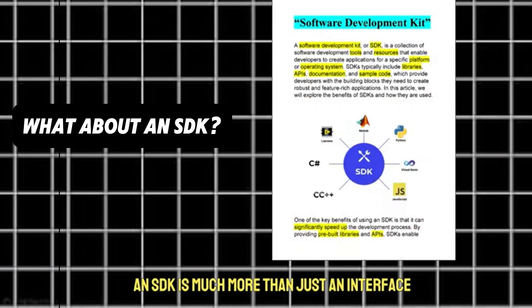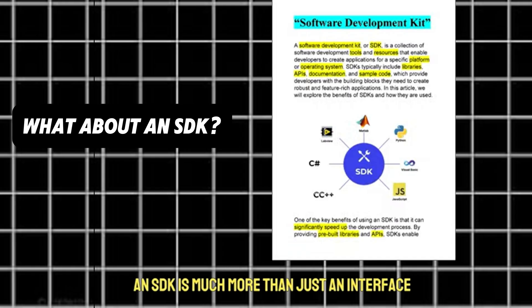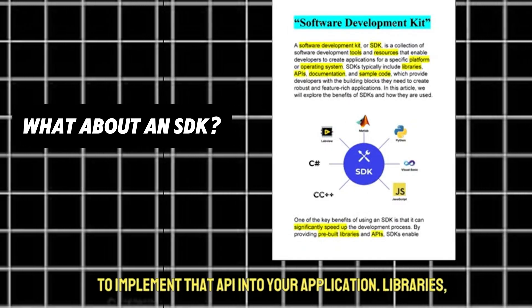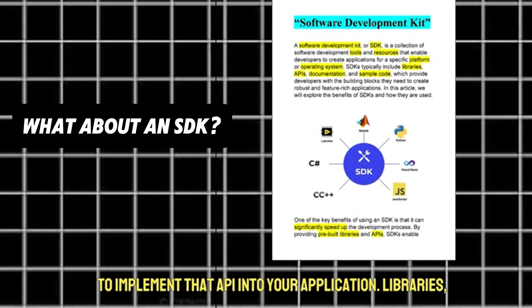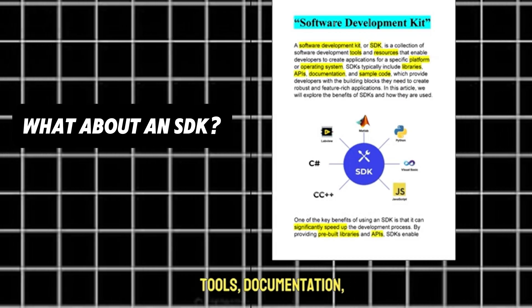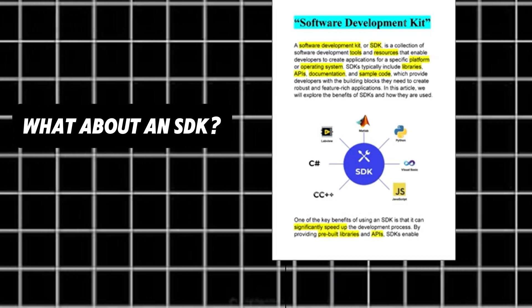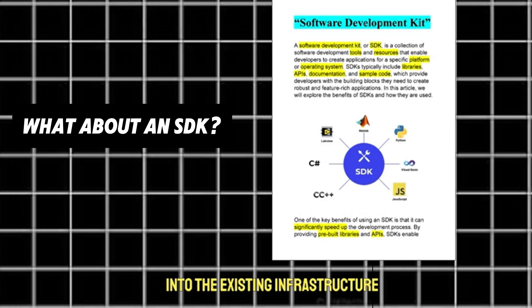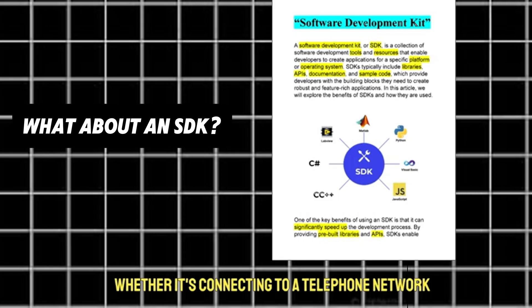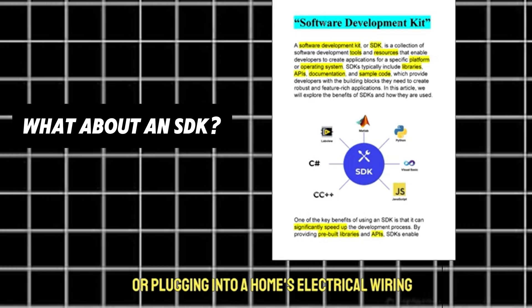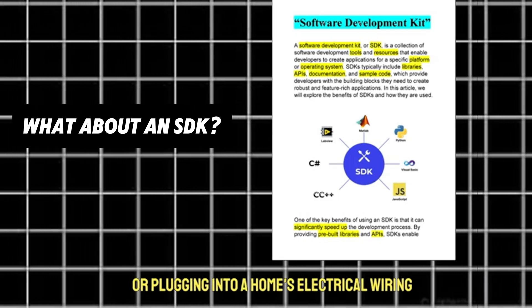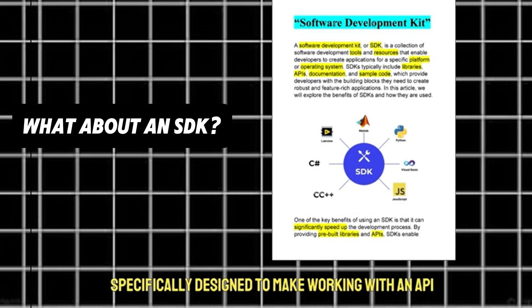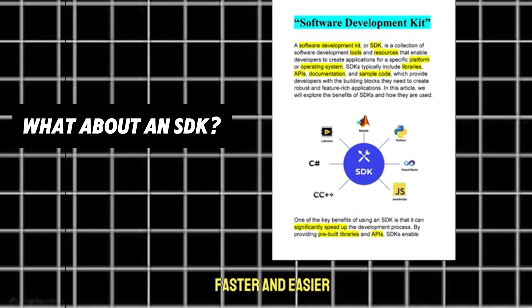But what about an SDK? An SDK is much more than just an interface. It's the toolkit that provides everything you need to implement that API into your application — libraries, tools, documentation, and sometimes even sample code. An SDK is like a toolbox for creating a custom system that hooks into the existing infrastructure, whether it's connecting to a telephone network or plugging into a home's electrical wiring. Think of an SDK as your custom toolkit specifically designed to make working with an API faster and easier.